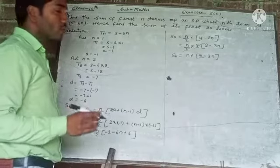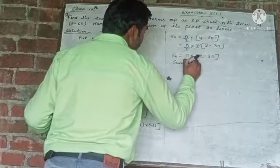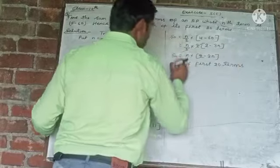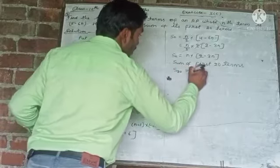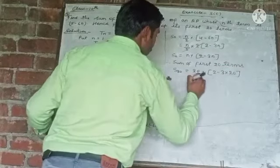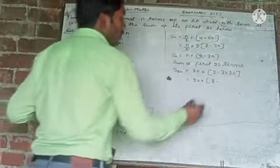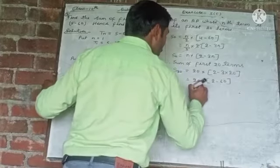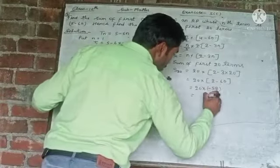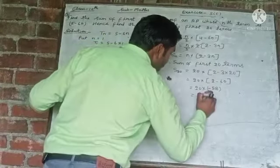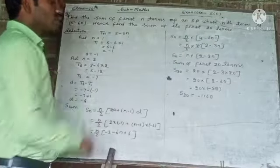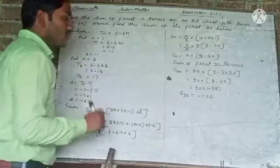Now we will find the value of the sum of the first 20 terms. In place of n, we will put 20. So S_20 is equal to 20 into (2 minus 3 into 20), which gives 20 into (2 minus 60), so 20 into (minus 58). Multiplying: 20 times 58 is 1160, so the answer is minus 1160. This is the sum of the first 20 terms of the AP.